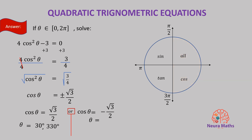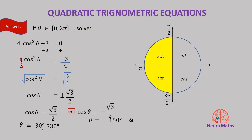What angle has a cosine of negative root 3 over 2? The cosine is negative in the second and third quadrant. So the angle is equal to 180 minus 30 and 180 plus 30. Therefore, the two angles whose cosine is negative root 3 over 2 are 150 degrees and 210 degrees.